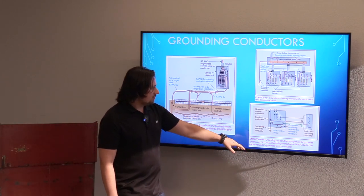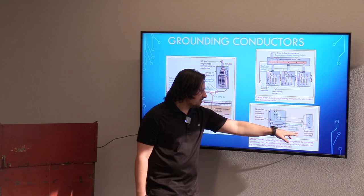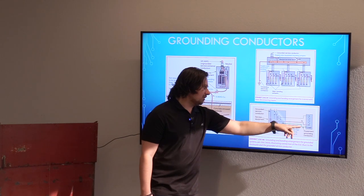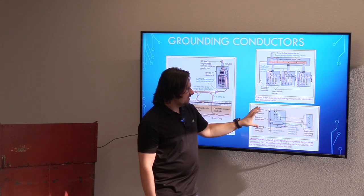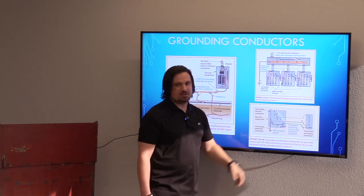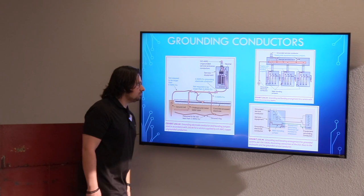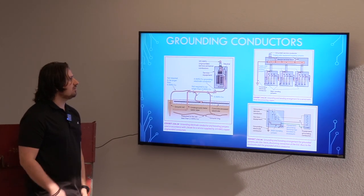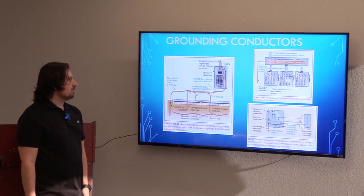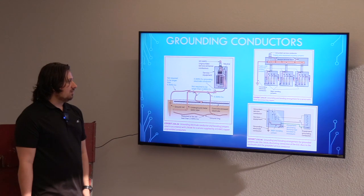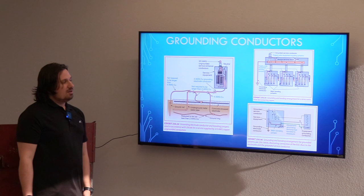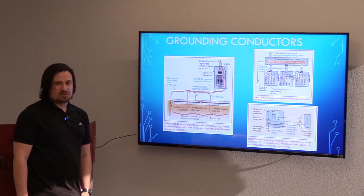Down here we're showing an equipment grounding conductor — that's from our service equipment to our load. So if we had a meter disconnect set up, this would be our panel, and we have the equipment grounding in between those two. That's just a basic overview. There's a lot more that goes into all of these sizings, whether it be your main conductors or your grounding conductors — there's a ton of stuff in the NEC if you want to read more into it.